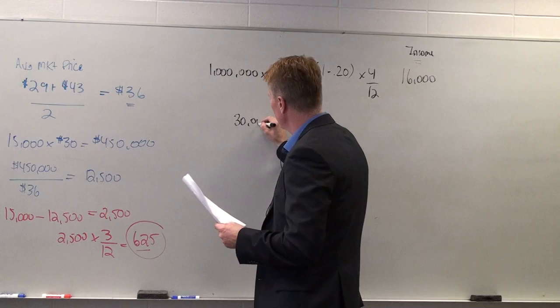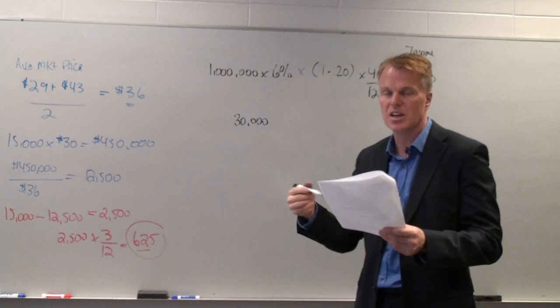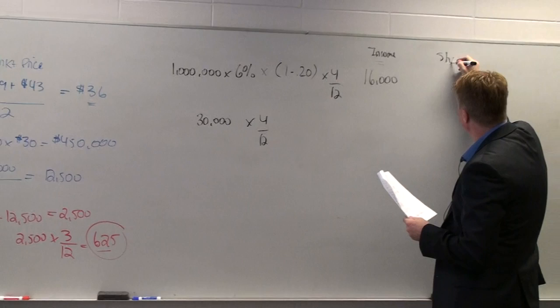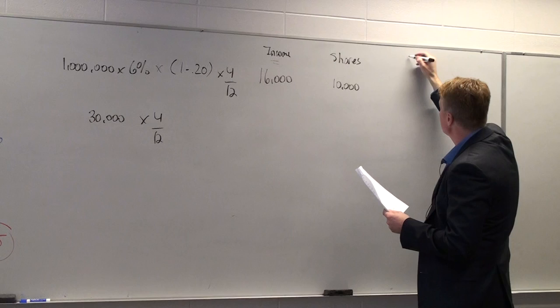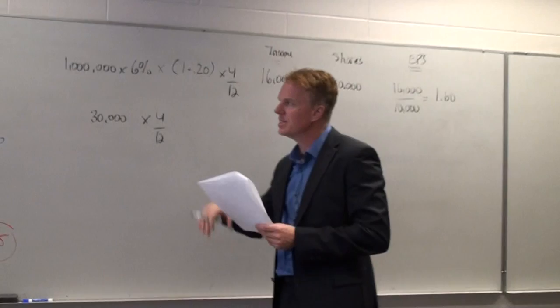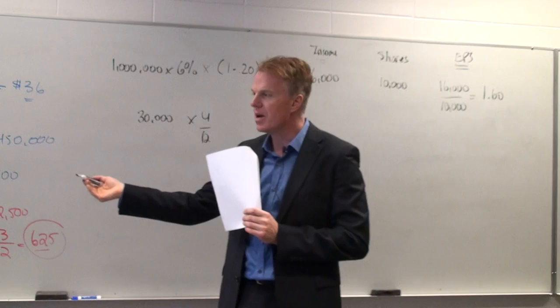So we have to calculate this at 4/12ths of the year. So our effect on income that we would be able to save if they were converted is $16,000. Now, of course, we'd have to give shares. So we'd have to look at the conversion factor, and it says that these could be converted into 30,000 shares. So 30,000 times the fraction would mean that this would be 10,000 shares.